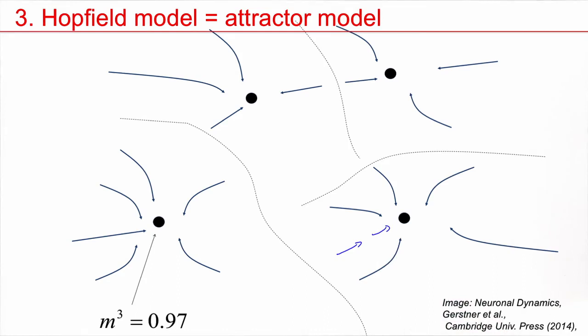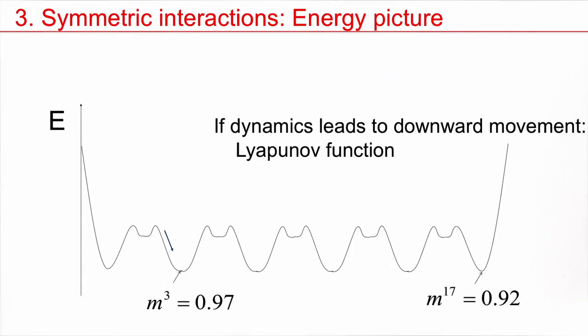Now there is an alternative view which is called the energy model view. You could say, my fixed point corresponds to an energy minimum and then if I start close to this minimum, if I start in one of the valleys, I would move down and approach the minimum. The minimum of the energy function E corresponds to a state with large overlap, which means that the network has retrieved one of the patterns, for example, pattern 3. If I start somewhere else, I would move down and end up in a different attractor, in a different minimum.